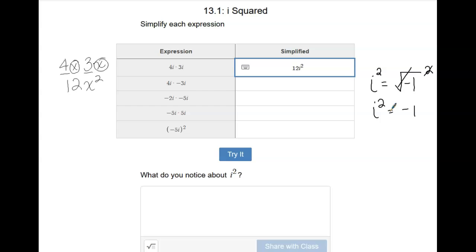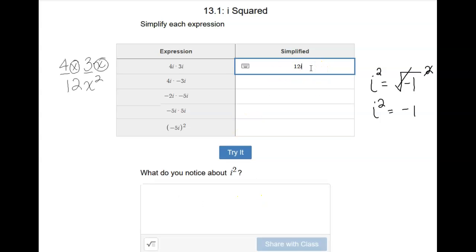When we have 12 times i squared, we're really saying 12 times negative 1. So we are going to take out this i squared, put a negative sign there instead, and there we go. We got the right answer.